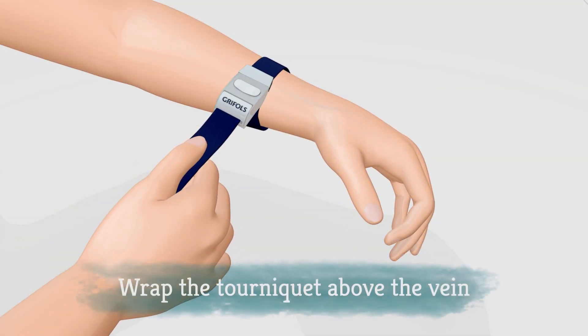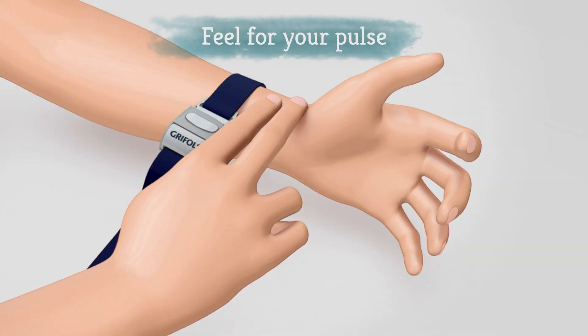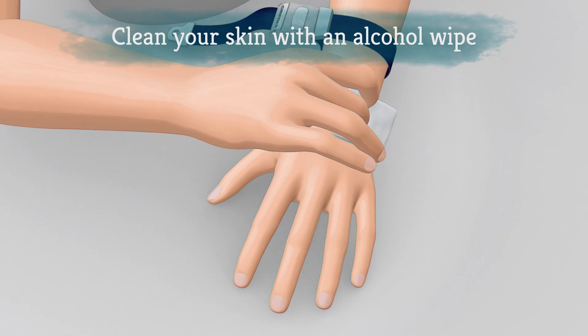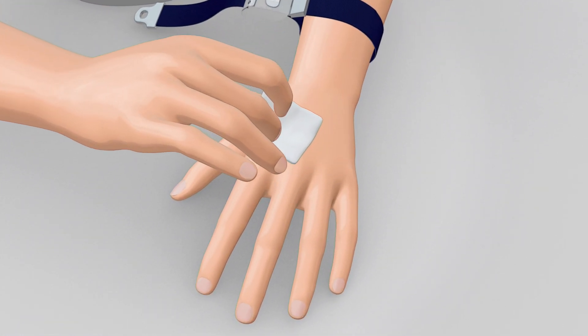Wrap the tourniquet around your arm or wrist about 3 inches above the vein you will use for the infusion. Make sure you can feel your pulse at your wrist or inner elbow, or adjust the tourniquet until you can. Use an alcohol wipe to clean the area of the skin above the vein where you are going to infuse.